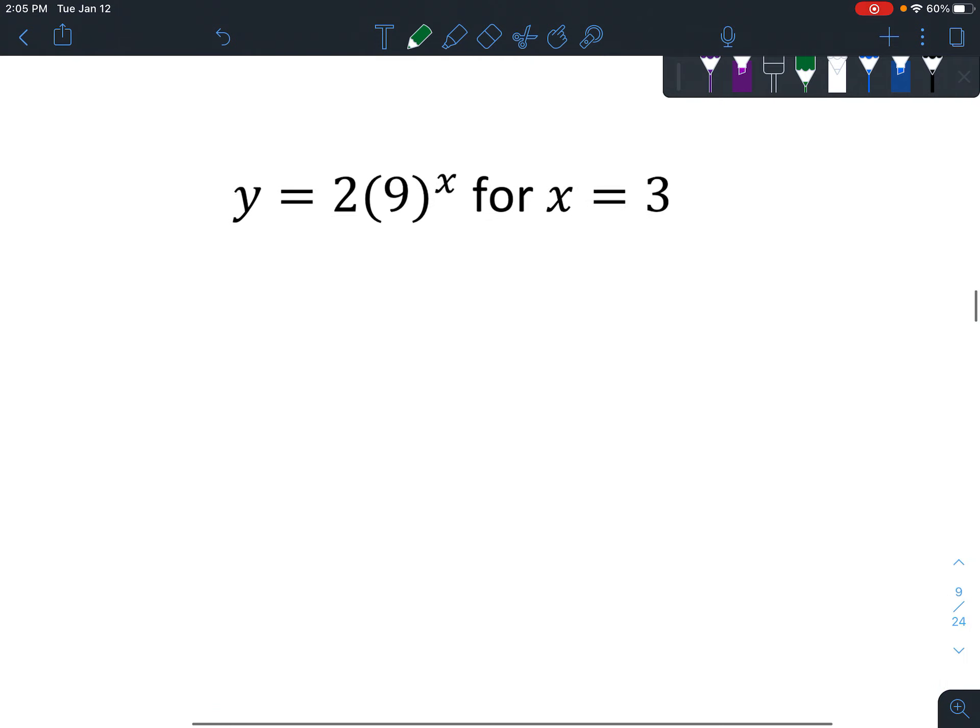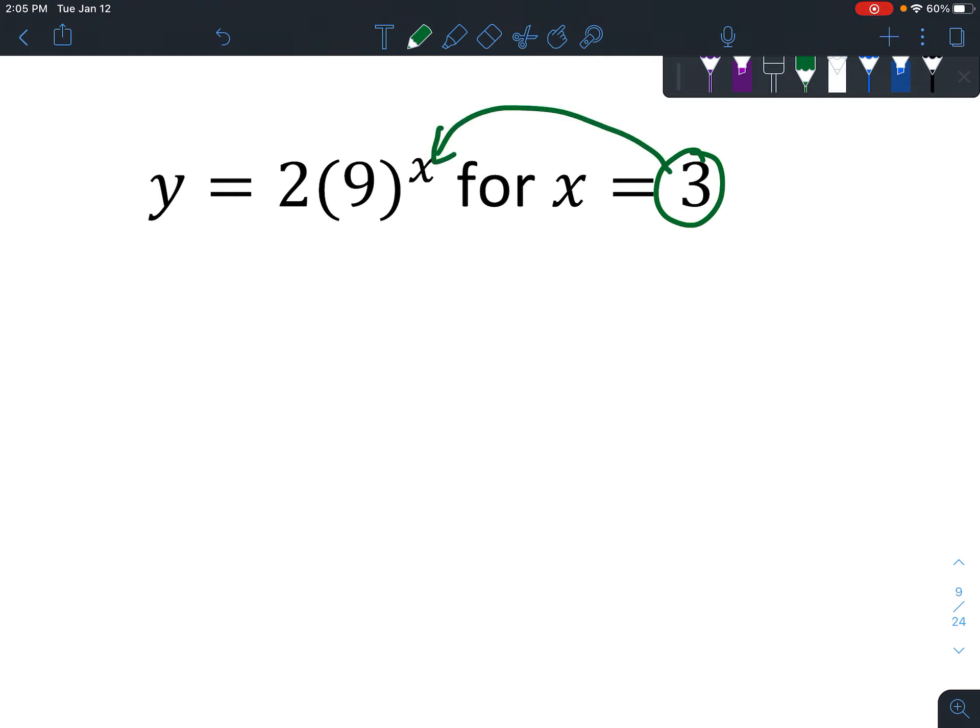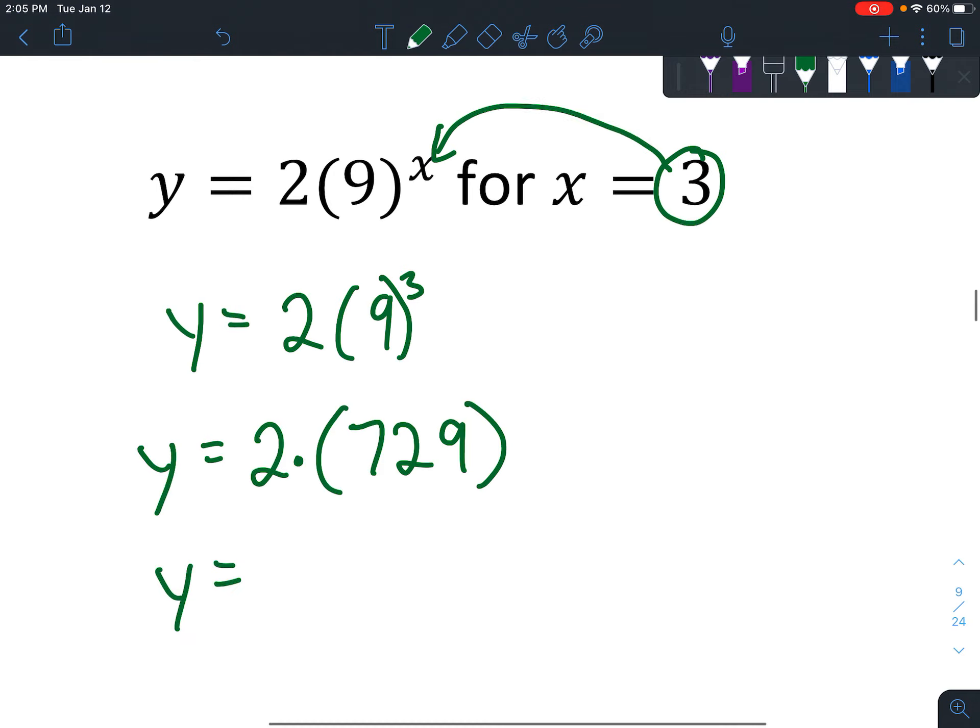Okay, and then next we've got x equals 3. And you plug it straight in for that x. So you get y equals 2 times 9 to the 3rd. And so that 3 only applies to the 9. So punch in 9 to the 3rd on your calculator, and you should get 729. And now we multiply by the 2, and you get 1,458.